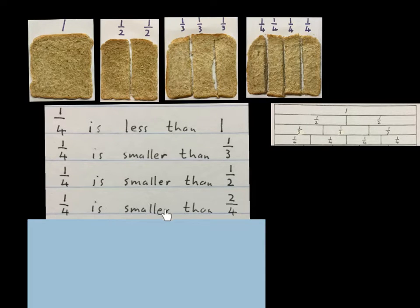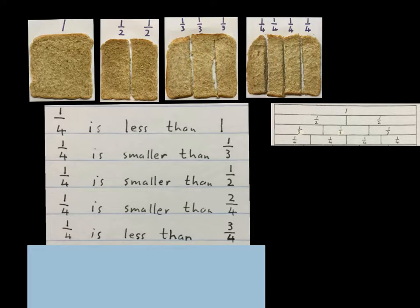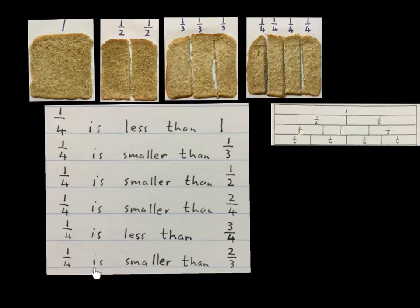One quarter is smaller than two quarters, because there is one quarter and another quarter in there. Therefore, one quarter is less than three quarters too, because in here is one quarter, another one, and another one — there are three quarters inside three quarters. The last statement says: a quarter is smaller than two thirds. There is my quarter, there is my two thirds — that quarter is smaller than those two.